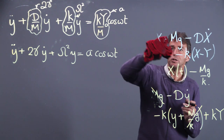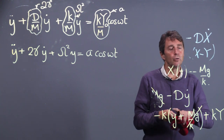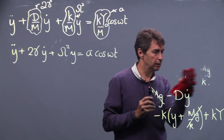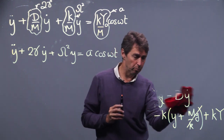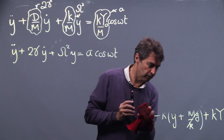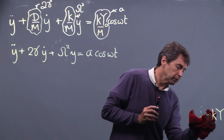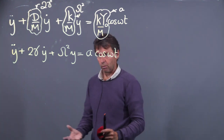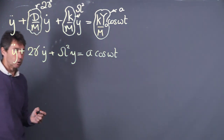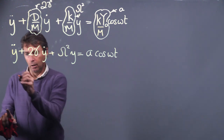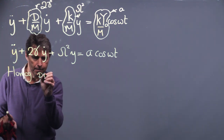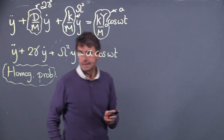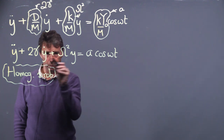The first step is to compute the homogeneous solutions. This mechanical oscillator system has the potential to oscillate because it's a spring-mass system, but we've included damping. You might wonder what happens if the damping becomes too strong — if so, it's more like the mass in treacle than air. For the homogeneous problem, we drop the right-hand side and look at the auxiliary equation.